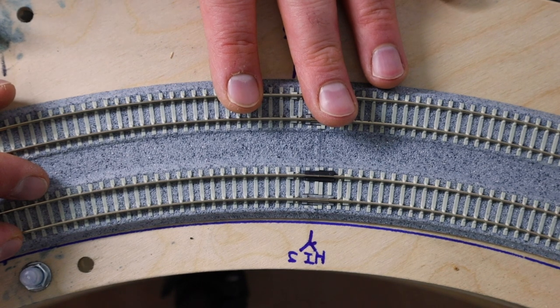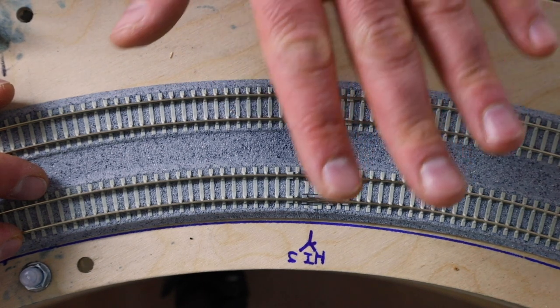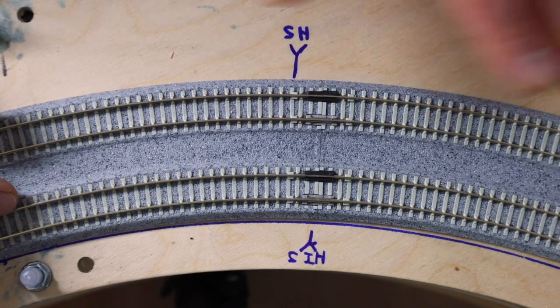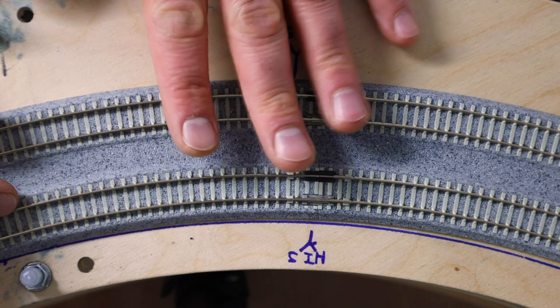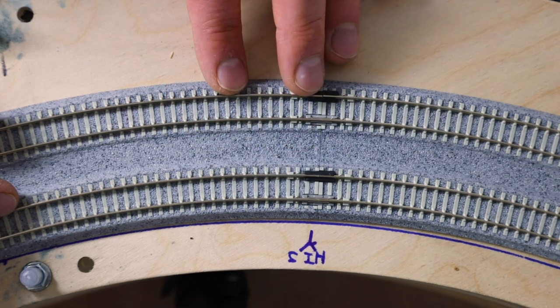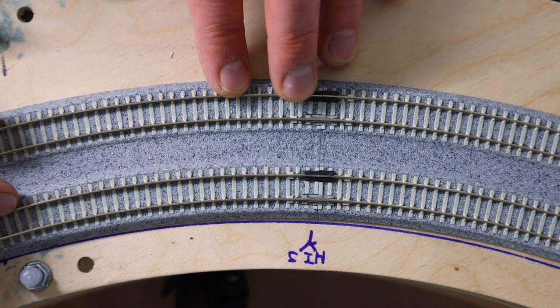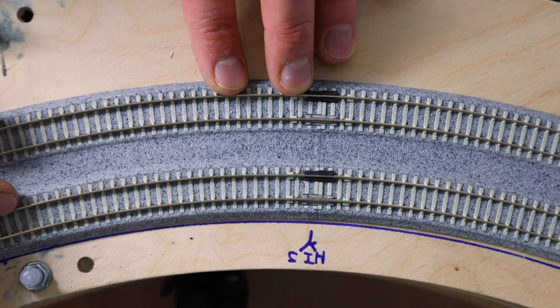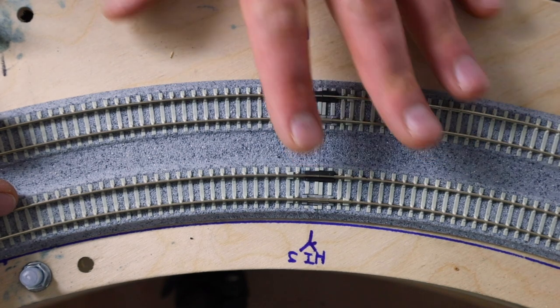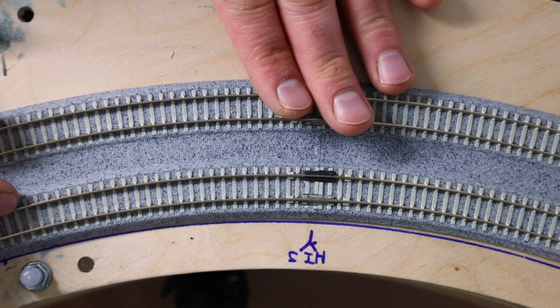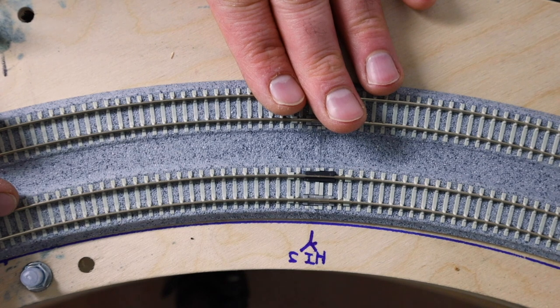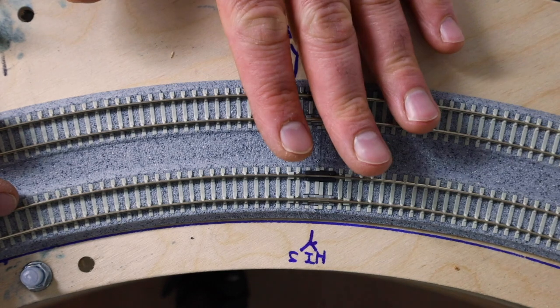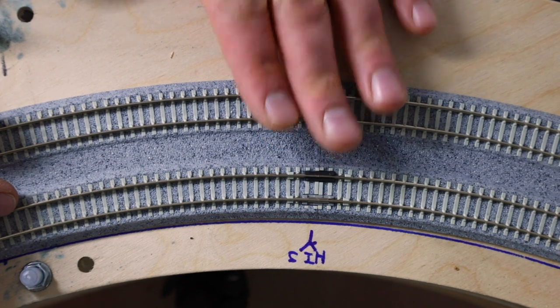Main reason for that is I want to be able to make sure that on each level I've got detection so that if a train stalls or becomes disconnected on any level it'll show on the block detection on the dispatcher panel. Some people will just have the whole helix as one block. I prefer doing it on each level as a block. It just gives me more control over detecting any broken train or split apart trains or stalled trains.